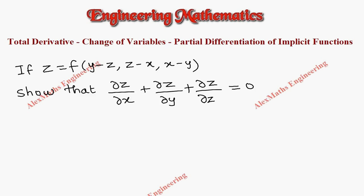Hi students, this is Alex here. In this problem we have z equal to f of (y minus z, z minus x, x minus y), and we have to show that ∂z/∂x plus ∂z/∂y plus ∂z/∂z equals 0.